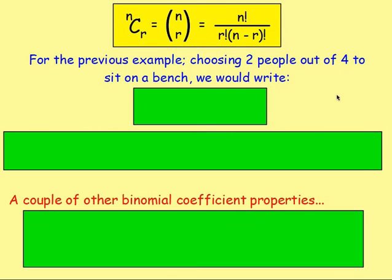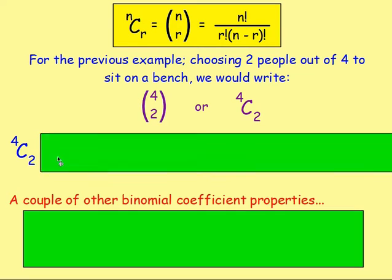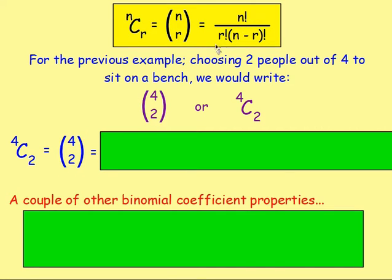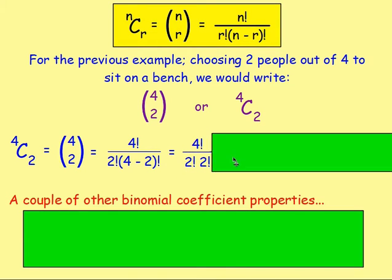For the bench example with four people choosing two, you write that as 4 choose 2 — four at the top and two at the bottom. Working that out using the formula gives four factorial over two factorial times (four minus two) factorial. Four minus two is two, so that becomes four factorial over two factorial times two factorial.